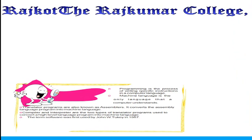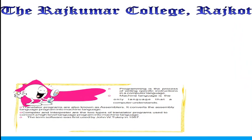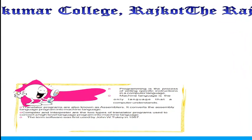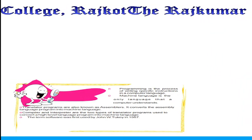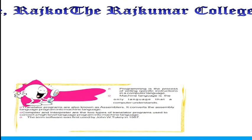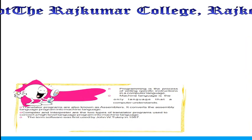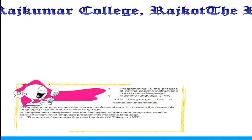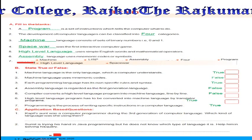Points at a glance: programming is the process of writing specific instructions in a computer language. Machine language is the only language a computer understands. An assembler converts assembly language into machine language. Compiler and interpreter are the two types of translator programs used to convert high level language into machine language. The term 'software' was first used by John W. Tukey in 1957.